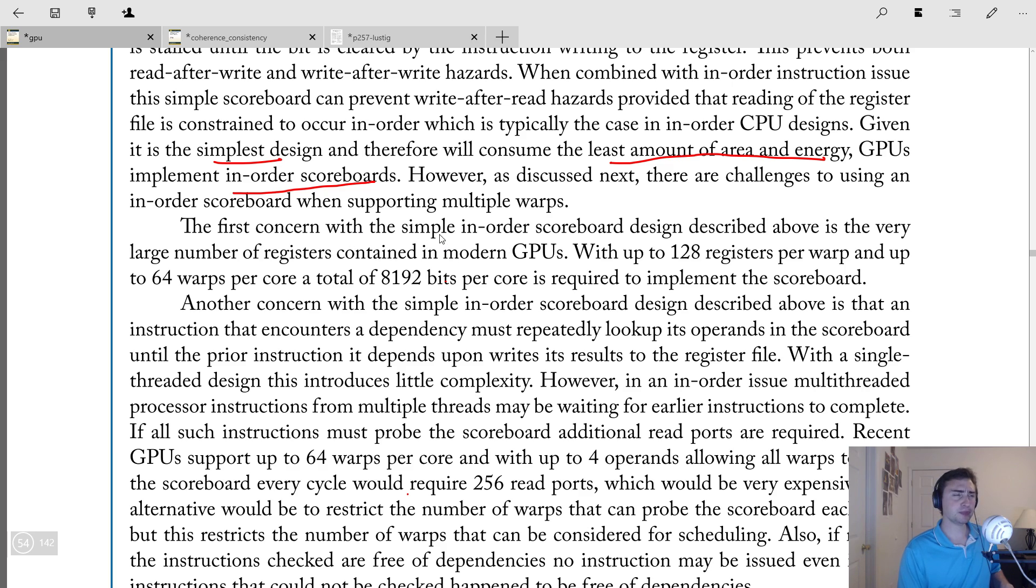So what's the first concern? Well, with a simple in-order scoreboard, we have a lot of registers, because the massively multi-threaded nature. So per warp, which is 32 threads, we can have up to 128 registers per warp. Now, if we have up to 64 warps per core, this means that we need to keep track of 8192 bits or 8k of bits per core to implement a scoreboard. So already we see that we're trying to use this massively multi-threaded thing, that in itself is going to have its own cost as it always does that we talked about earlier with the register file and the fact that the register files are so big. It's also going to complicate the fact that we need for dependency tracking that this naive port from CPU to GPU is not really realistic.